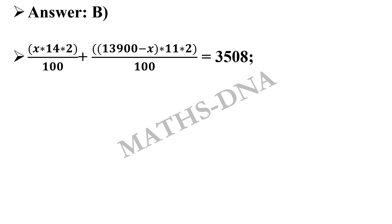Moving on to the solution, the answer will be B and now let us see how. Let the amount invested in scheme S1 be X. Then the interest from S1 is X × 14 × 2 / 100, plus the interest from scheme S2 is (13,900 − X) × 11 × 2 / 100, and the total interest is equal to Rs 3,508.